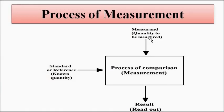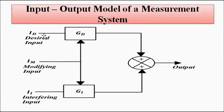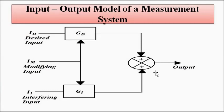The process of measurement essentially involves the unknown quantity to be measured, the reference standard, and the result which is the output. This is the input-output model of a measurement system we have already discussed. With the desired input, apart from that there are other inputs — modifying and interfering inputs — which become part of the system no matter how much we try to eliminate them. Their transfer function blocks are summed together to give the output.